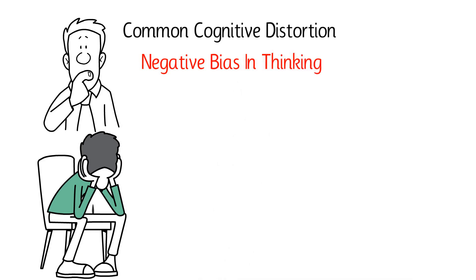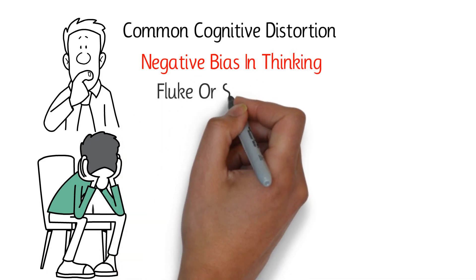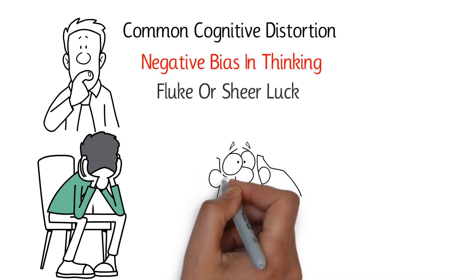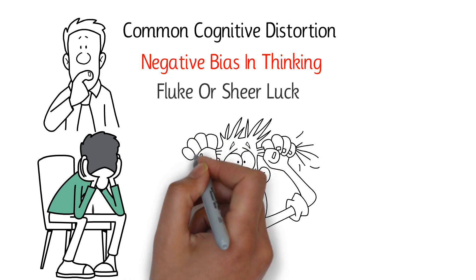Disqualifying the positive involves a negative bias in thinking, where the positive is explained away as a fluke or sheer luck. This can reduce motivation and cultivate a sense of learned helplessness.